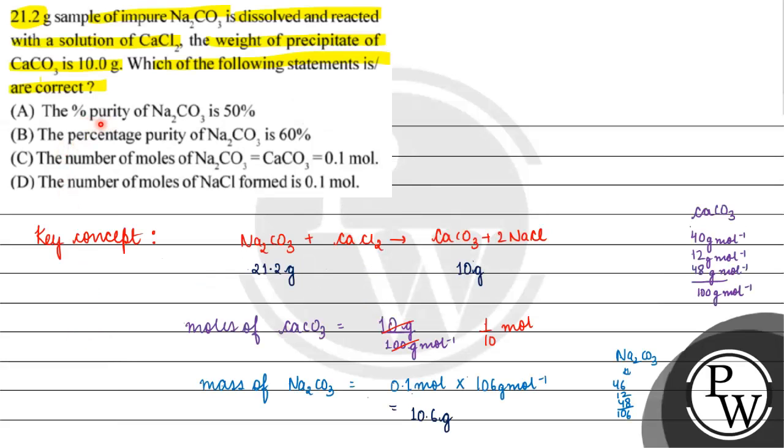Let's check the options. Percentage purity of Na2CO3 is 50 percent, this statement is correct. Then percentage purity of Na2CO3 is 60 percent, this option is wrong. Then the number of moles of sodium carbonate and calcium carbonate is 0.1 mole, this statement is also correct. And option D, number of moles of NaCl formed is 0.1 mole, this statement is wrong. Which statements are correct? Option A is correct and option C is correct. I hope you understood it well, thank you and all the best.